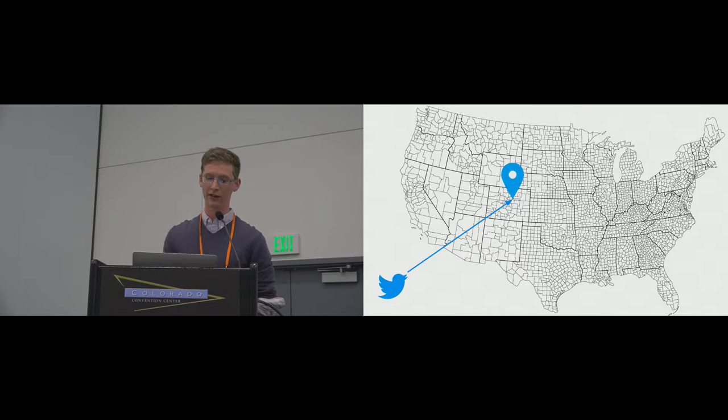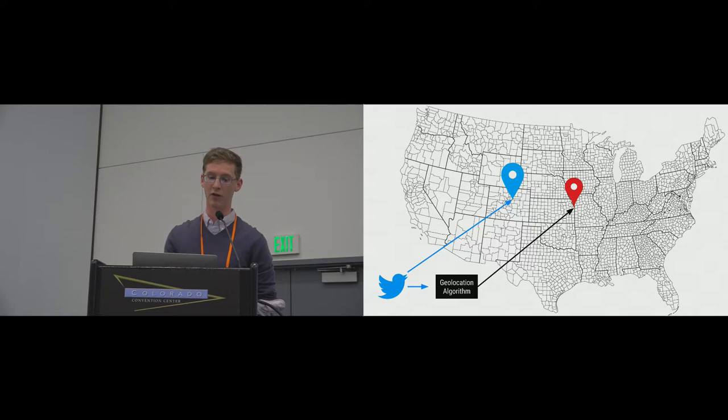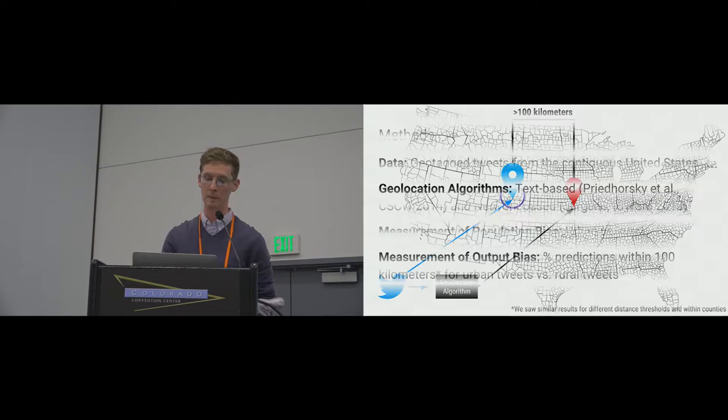To measure output bias, we take a given tweet whose location is known — Denver, for instance — feed it into the model without telling the model where it's from, and the model makes a prediction using either the tweet content or the location of the user's friends. We track whether the prediction is within 100 kilometers of the correct location. And we compare the percentage of correct predictions for urban tweets versus rural tweets to determine if there is an output bias.